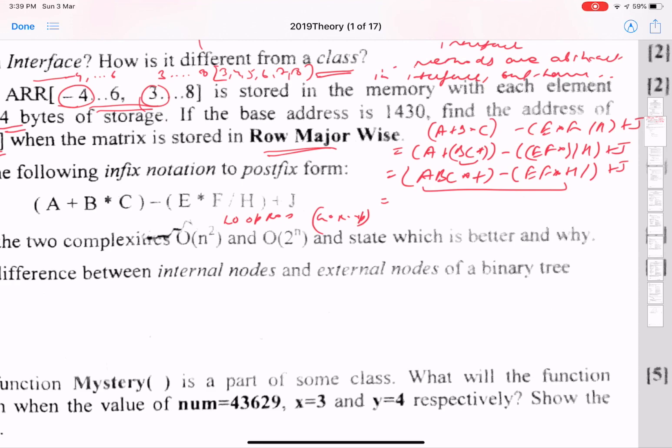So we have first term ABC*+, EF*H/ -, and then minus, then we have +J.